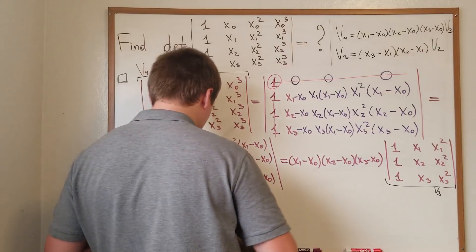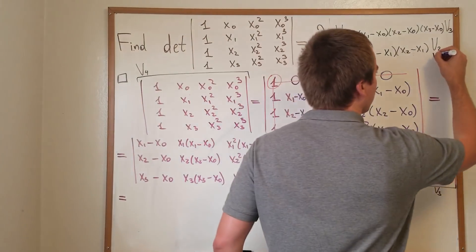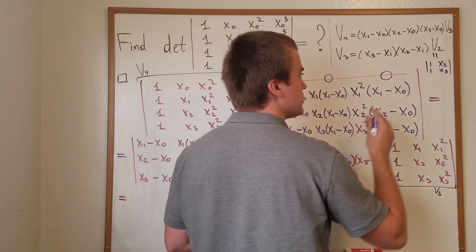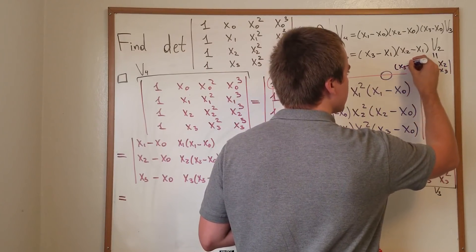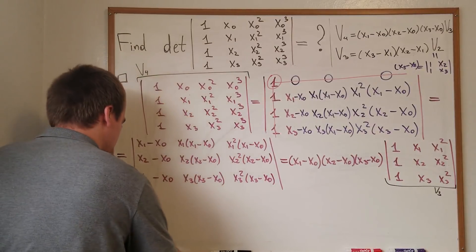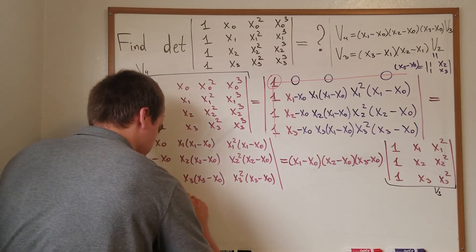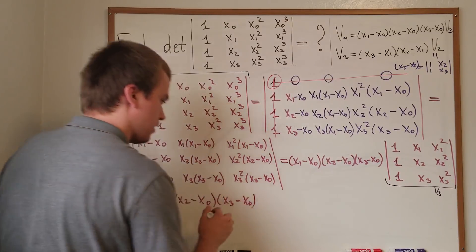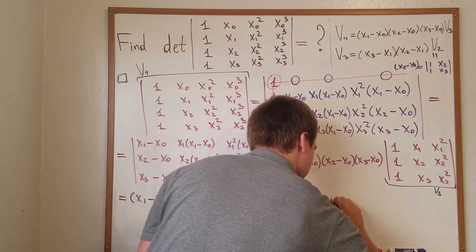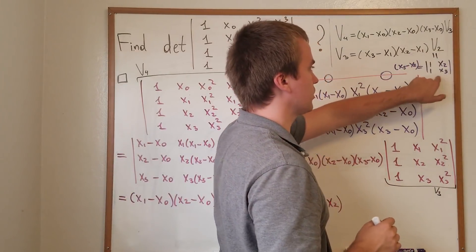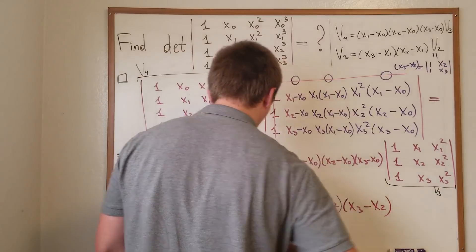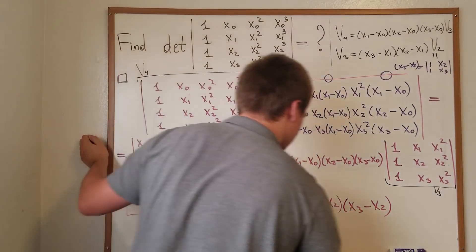V₂ is simply the 2×2 determinant with rows (1, x₂) and (1, x₃), whose value is exactly x₃ − x₂. So the full determinant equals the product: (x₁ − x₀)(x₂ − x₀)(x₃ − x₀) from V₄, times (x₃ − x₁)(x₂ − x₁) from V₃, times (x₃ − x₂) from V₂. And we are done — the value of this determinant is just this long product.